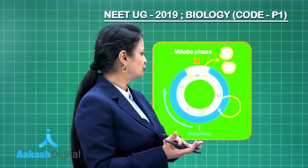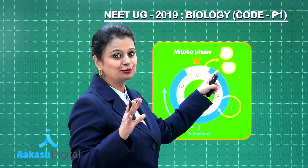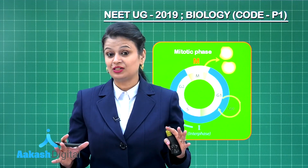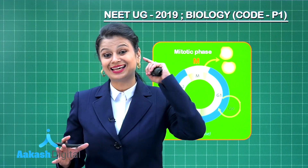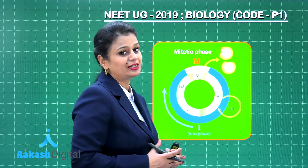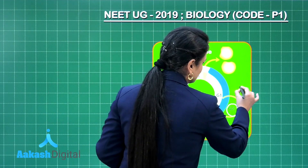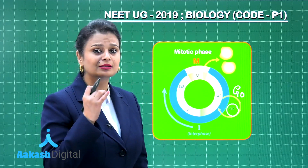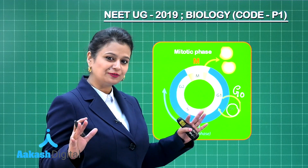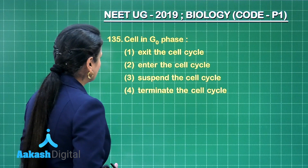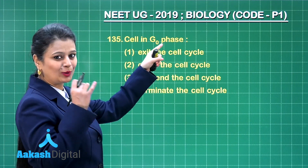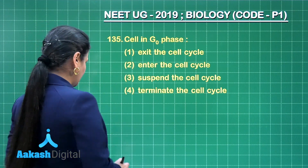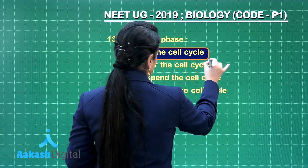After division, two daughter cells are formed. One daughter cell may not proliferate further — it has lost its division capacity, meaning it has exited the cell cycle and entered G0 phase. In G0 phase, the cell exits the cell cycle and will not proliferate further unless called upon to do so. It is a quiescent phase where the cell is not dividing. The right answer is option number one.